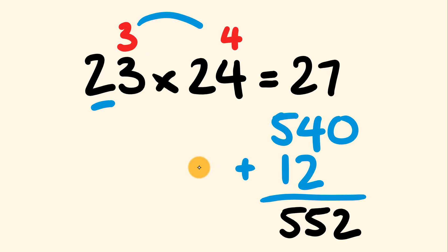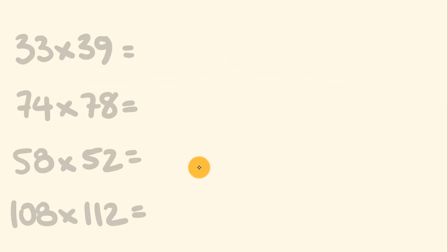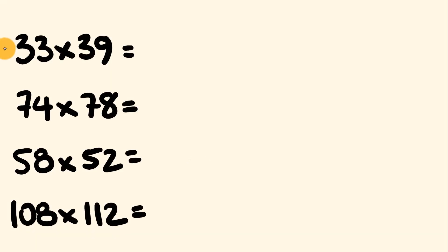And I'll tell you what, I want to see how fast you're going to be doing these. So we'll look at those examples that I showed you at the start of this video. We had 33 multiplied by 39. 74 multiplied by 78. 58 multiplied by 52. And 108 multiplied by 112. Now, you might even notice on one of these, there is another trick you can use that we looked at in a previous video. I'll show you that as we come along. So, what about you pause these and give this a go.